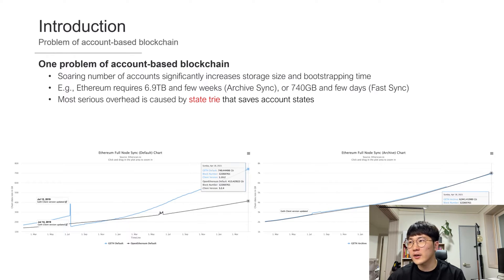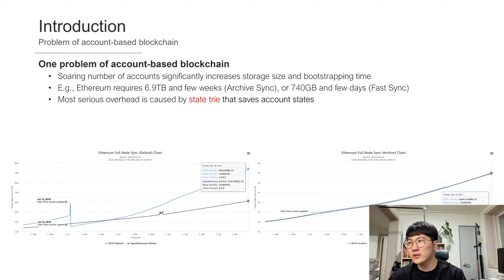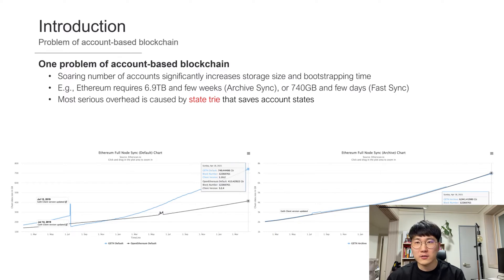For example, Ethereum requires 6.9TB and a few weeks to catch the current block with archive sync, and it requires 740GB and a few days with fast sync. The most serious overhead of storage size and bootstrapping time is caused by the state trie that saves account states. This is because the number of accounts exceeds more than 100 million, and these accounts build the trie, and the storage size becomes a multiple of the number of accounts.